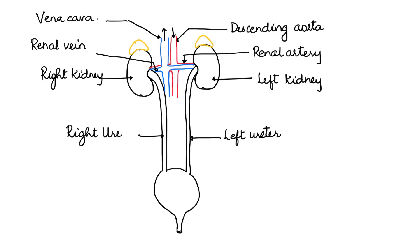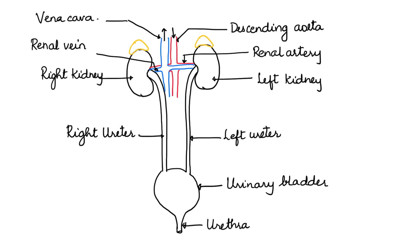The pear-shaped sac is the urinary bladder. This has a tube coming out and that is the urethra. The urethra opens outside the body. Finally, we mark the triangular structures — that is the adrenal glands. So here we have the diagram of the human excretory system which is completely labeled.